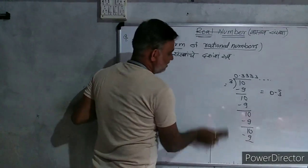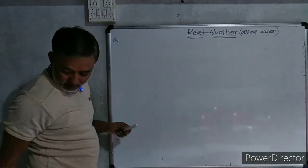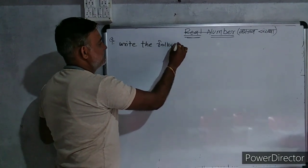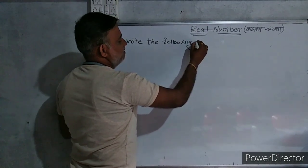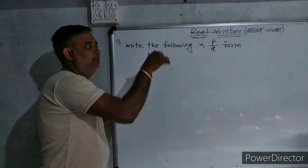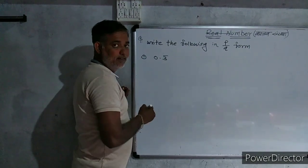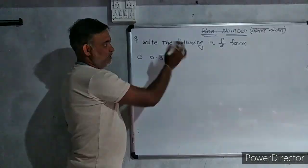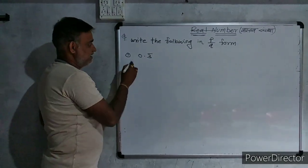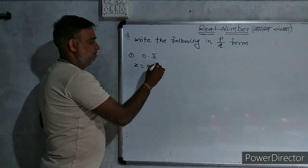Write the following numbers in p upon q form. The first example is, suppose 0.3 bar. We just solved. Now we have to inverse it. Means we have to write in p upon q. How many digits after decimal point? Only one. Therefore, x is equal to 0.3 bar.